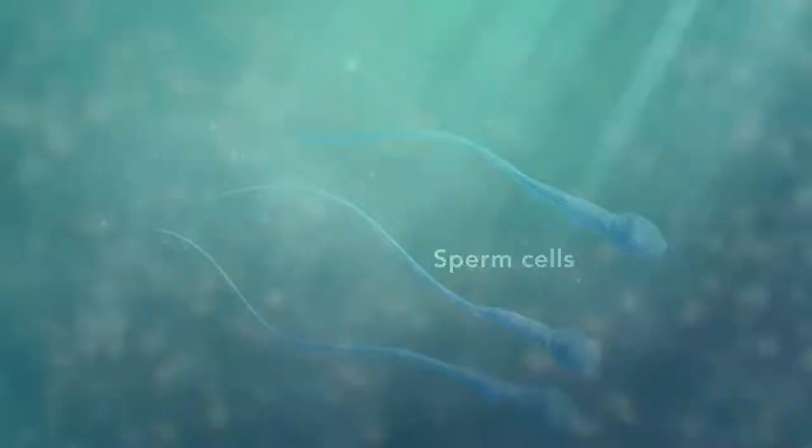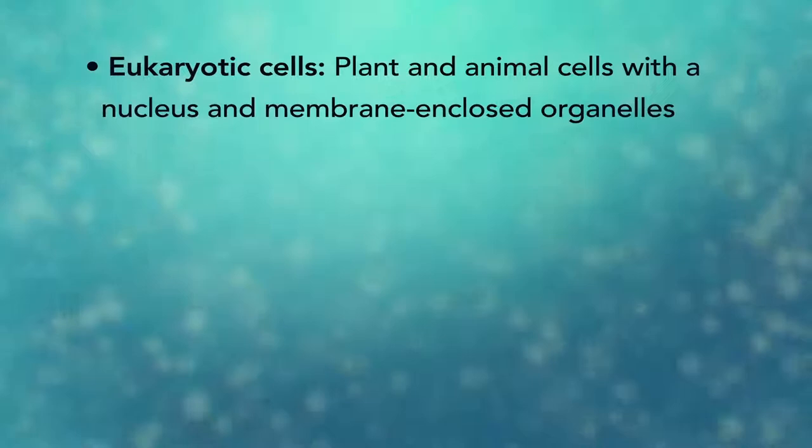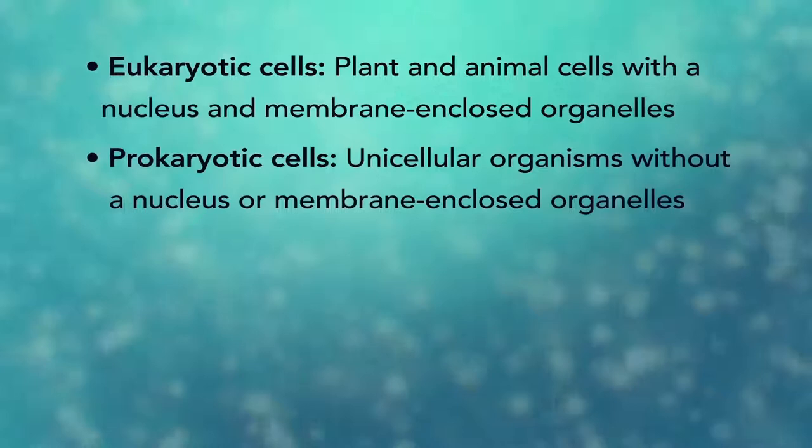In summary, remember, eukaryotic cells are plant and animal cells with a nucleus and membrane-enclosed organelles, while prokaryotic cells are unicellular organisms without these things. All cells have a cell membrane, cytoplasm, and genetic material.